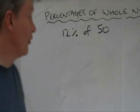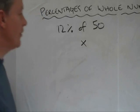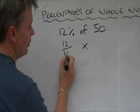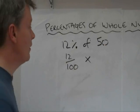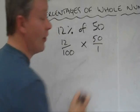Okay, so just as we've done before, wherever you see the of sign, it means multiply. Wherever you see the percentage, it means 12 over 100. Wherever you see a number, it's just much easier if you call it 50 over 1.